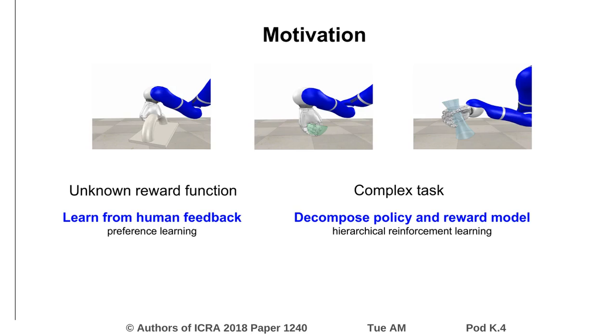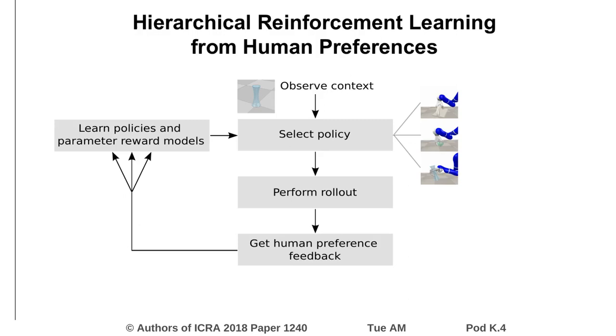To improve sample efficiency, we take a hierarchical approach and decompose both the policy and the reward model into multiple options. In the case of grasping, each option corresponds to a grasp type.